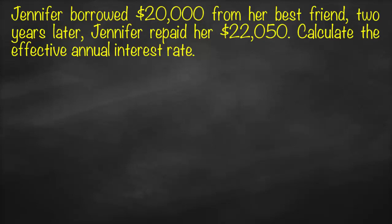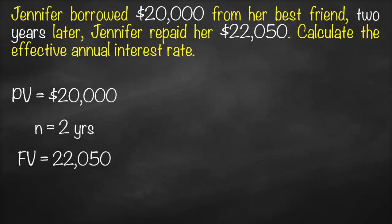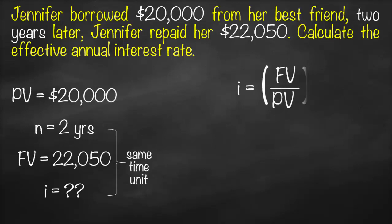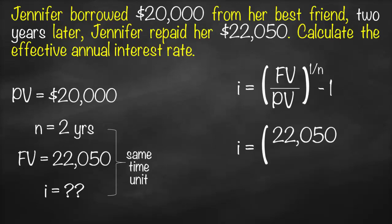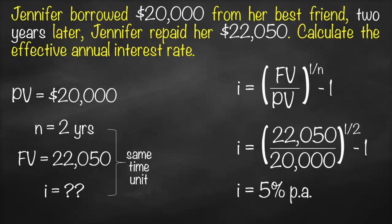In this example, we have present value of $20,000, number of years = 2, and future value of $22,050. We need to calculate the effective annual interest rate. Our interest rate formula is (FV/PV) to the power 1 over n, minus 1. So: (22,050 / 20,000) to the power 1 over 2, minus 1, gives an interest rate of 5% per annum — per annum because time is in years, and interest and time must share the same unit.